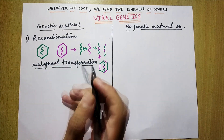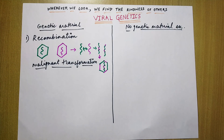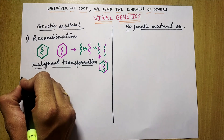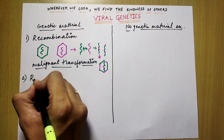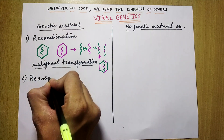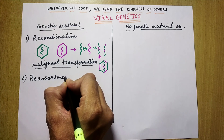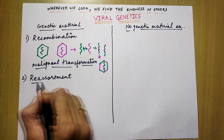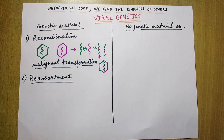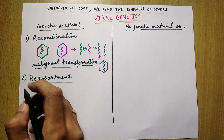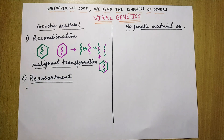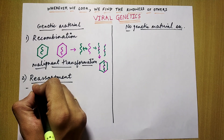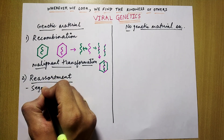I hope the process of recombination is clear to you. Now the second process we are going to discuss is reassortment, and this is very high yield for USMLE Step 1. In reassortment, a similar thing happens but reassortment occurs only in segmented viruses — that means viruses that contain a segmented genome. That is the first requirement.